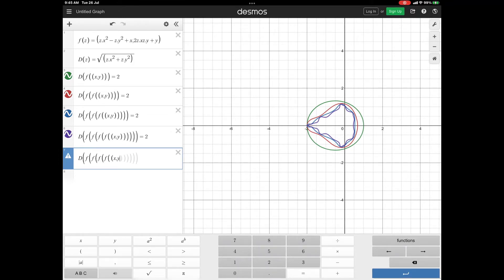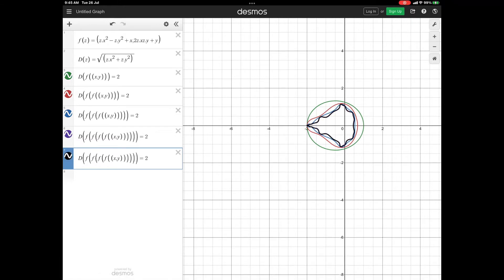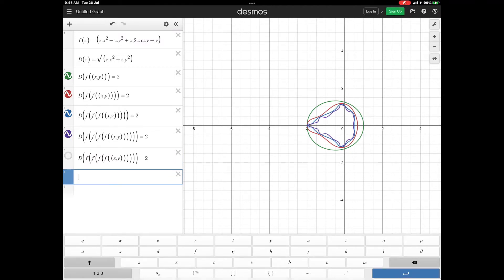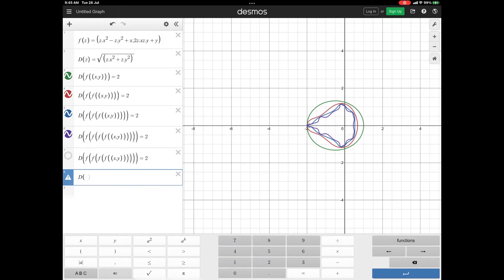Now, this is the pattern which we want to repeat. So, you go to the next row and put d of, now put f of f. So, function of a function, f of f. This is called a recursive pattern. So, we are going to talk about recursive pattern in which we have f of f. x, comma, y, now close the brackets, equal to 2.